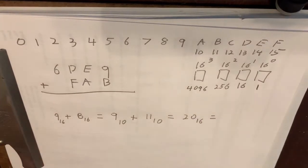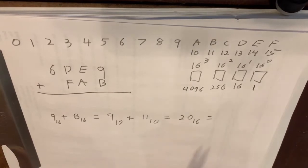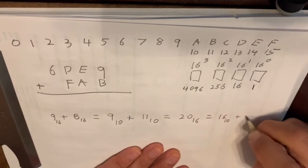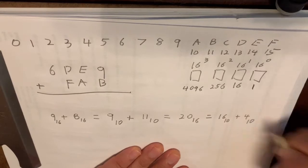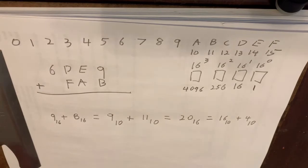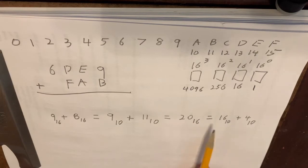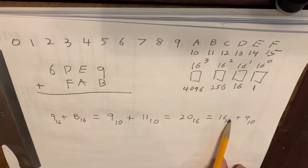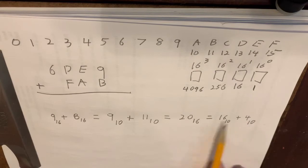Now the next thing we want to do is decompose. We want to decompose this 20 as 16 base 10 plus 4 base 10. Now I want to ask you — maybe you should ask yourself — why would this guy do this? Why would he take 20 and represent it as 16 plus 4? Where on earth did this 16 come from? Pause the video and think about why he would write it as 16 plus 4.